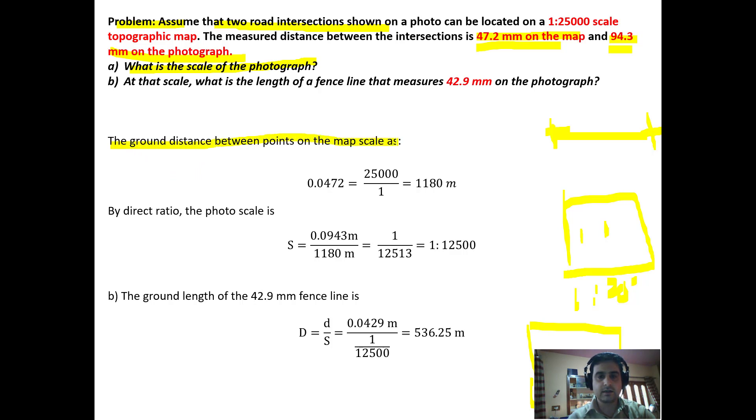The ground distance between points on the map scale: the distance on the map in meters equals 25,000 which is the scale of the map. From this we calculate the ground distance. We know that scale equals distance on photo upon distance on map, so the ground distance equals 1180 meters.